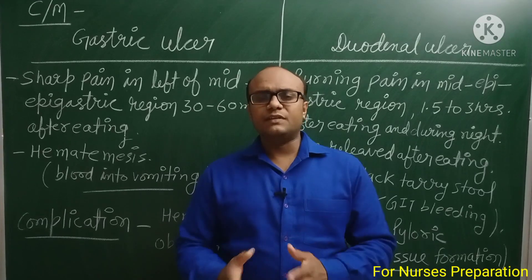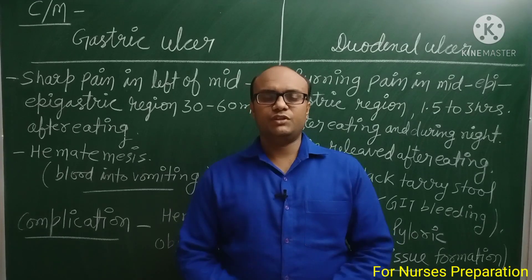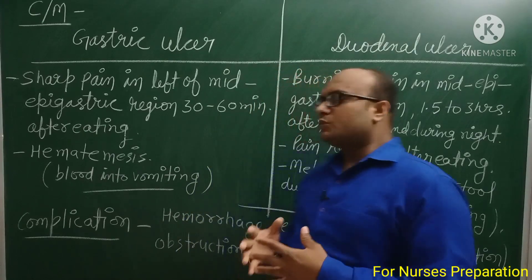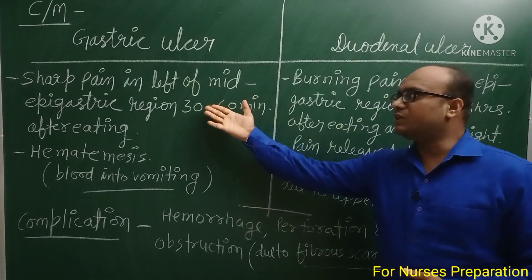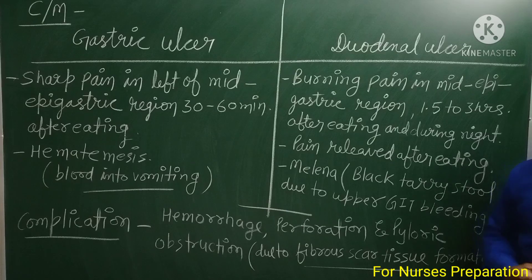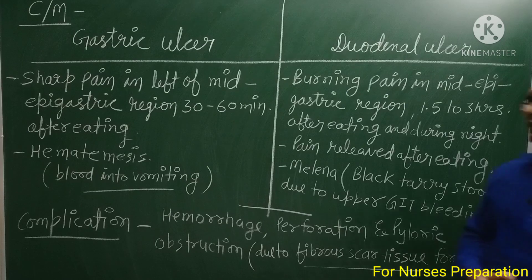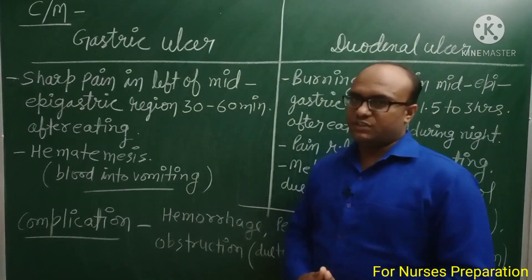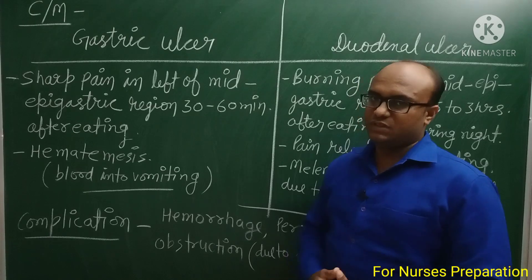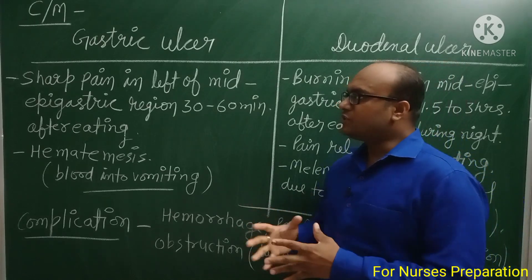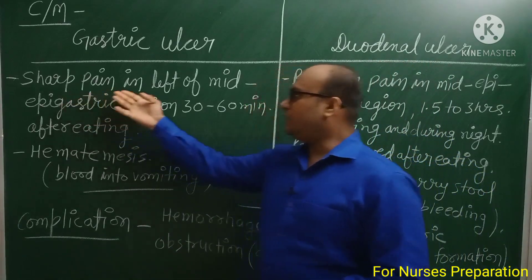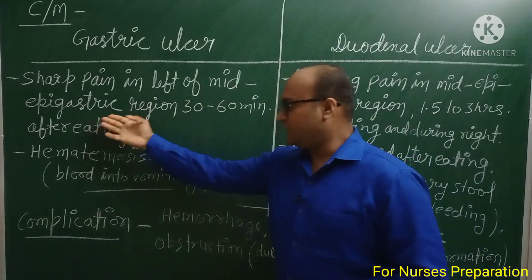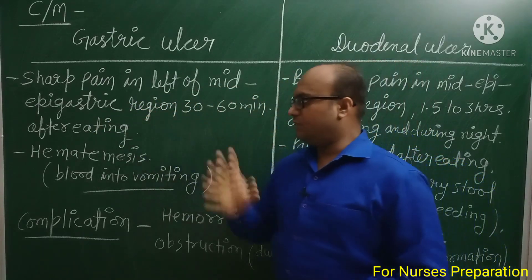अब बात करेंगे Peptic Ulcers के complications की। दो important types के Peptic Ulcers होते हैं: पहला Gastric Ulcer और दूसरा Duodenal Ulcer। इनको location of ulcer के हिसाब से नाम दिया गया है। Gastric ulcer mostly gastric region में पाया जाएगा। Gastric ulcer में symptom: Sharp pain in left of mid-epigastric region, 30-60 minutes after eating।